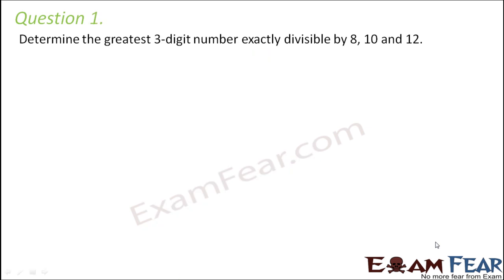Question number 1: Determine the greatest 3-digit number exactly divisible by 8, 10 and 12. So what are we supposed to do here? We have to find out a number which is exactly divisible by 8, 10 and 12. That means 8 is a divisor of that number, 10 is also a divisor of that number, and 12 is also a divisor of that number.